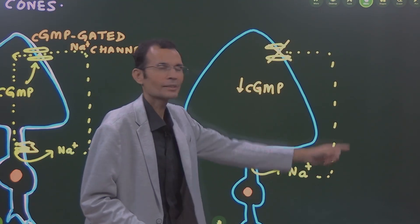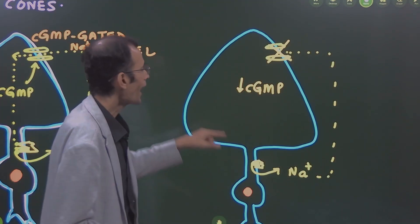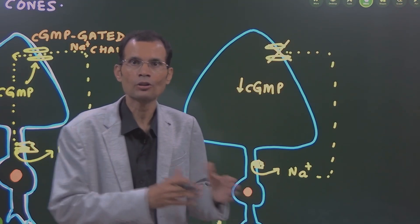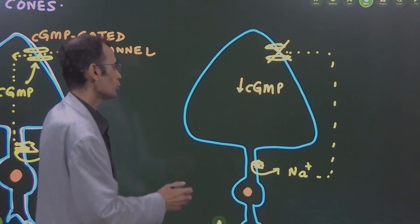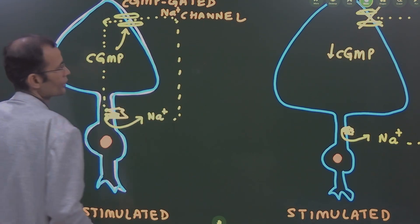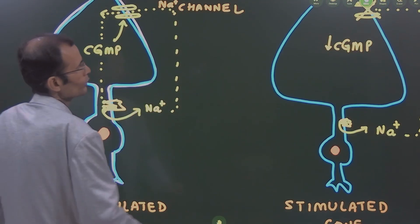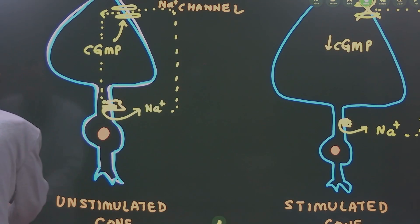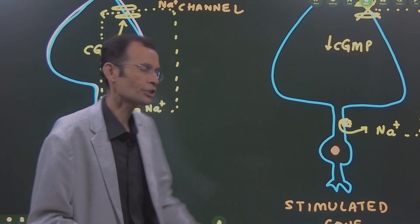Sodium goes out but cannot come back in, and the rod or cone is hyperpolarized. Remember, it is the hyperpolarization of the rod or cone which is the stimulated state. Receptor potential is a hyperpolarizing potential. This is the link of cyclic GMP. Let us see the action of sildenafil which results in blue vision.